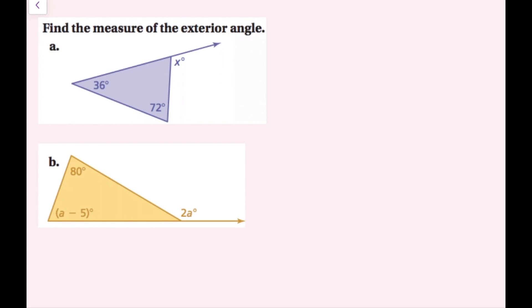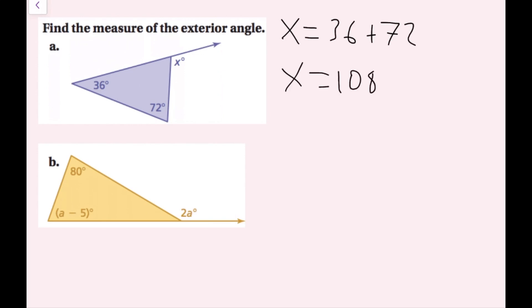We want to find the measure of each exterior angle. Here I have x as the exterior angle, and on the inside of the triangle I have 36 and 72 degrees. The exterior angle equals the sum of the two non-adjacent interior angles, so x equals 36 plus 72, which is 108 degrees. This method is much quicker than using supplementary angles.